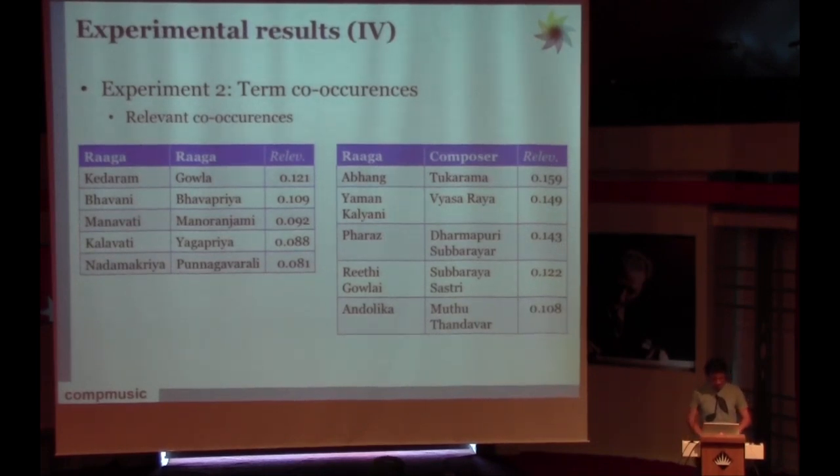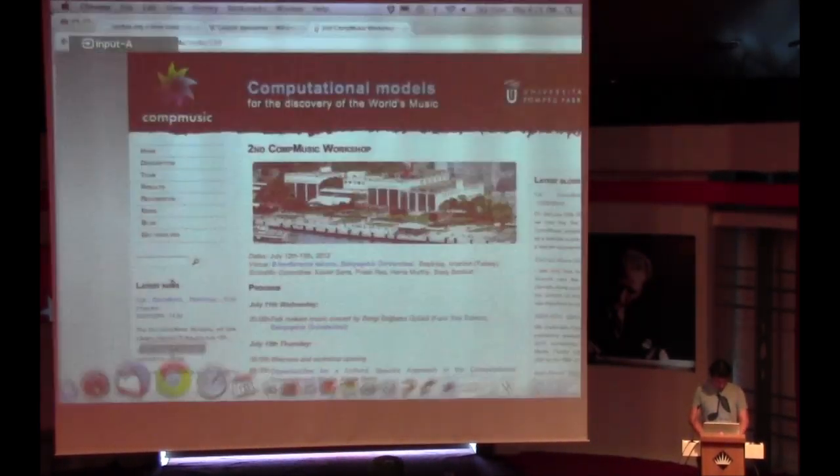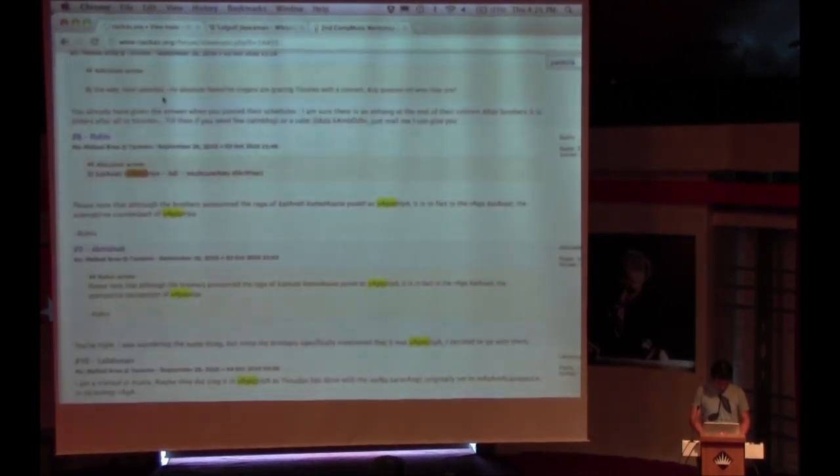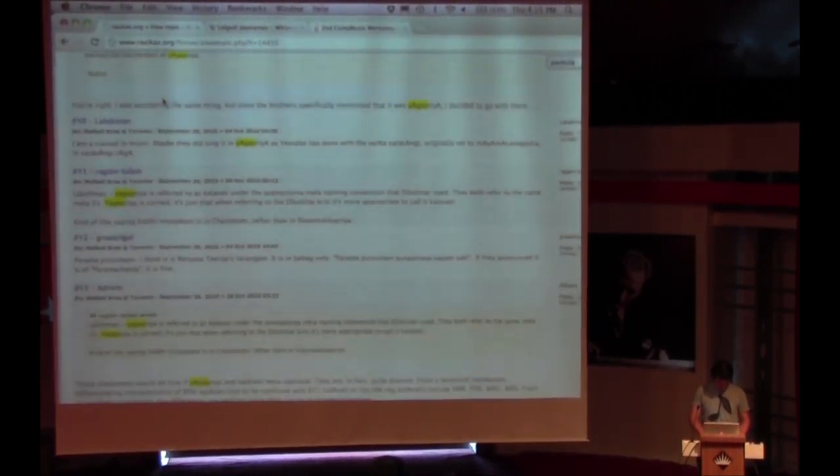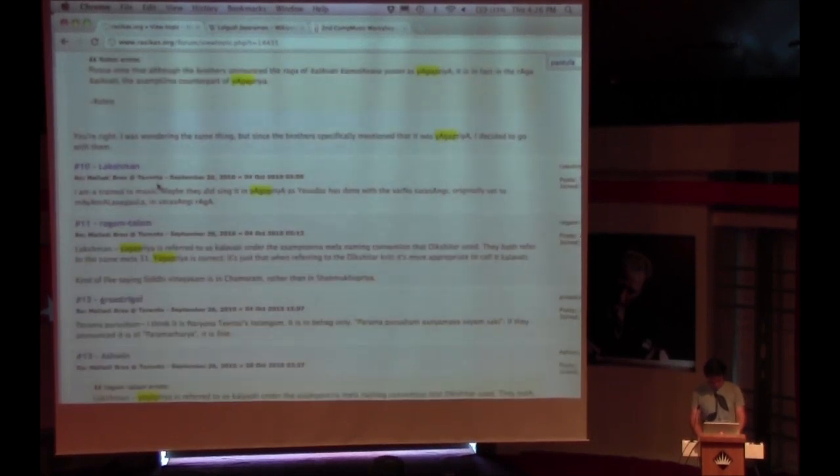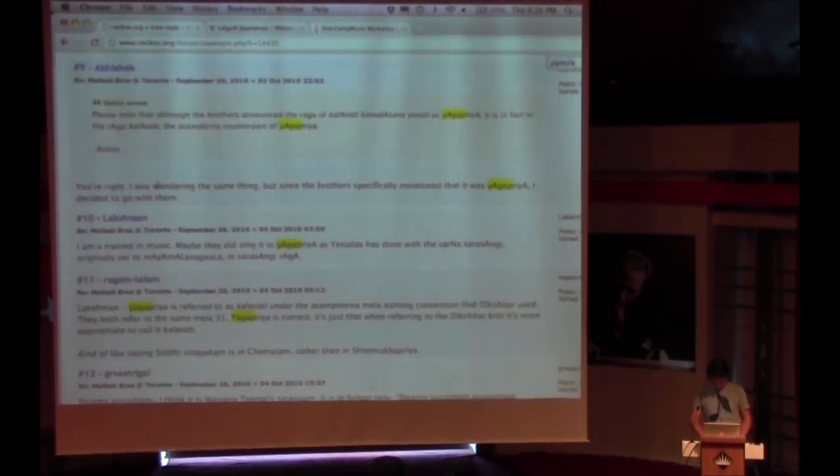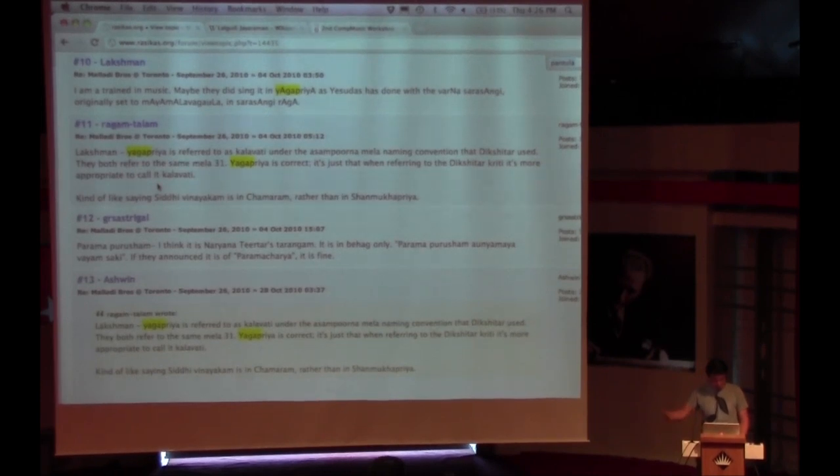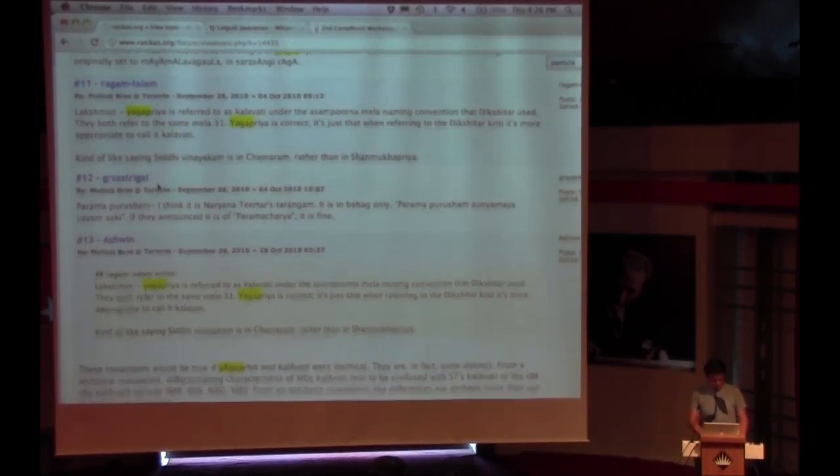We actually looked back at the Rasikas discussion forum to understand why these ragas were paired together. For example, the case of Bhavani, Bhavapriya, if I'm not wrong, Bhavani is how Dikshitar or disciples call Bhavapriya raga. And this raga Kalavati and Yagapriya, if I have one minute I can show you the discussion in rasikas.org. There is, for example, one user that says Yagapriya is referred to as Kalavati under the Sampurna Melakarta naming convention that Dikshitar used. They both refer to the same mela, Yagapriya is correct, blah blah blah. But then Ashwin said that this statement will be true if Yagapriya is in fact quite distant.